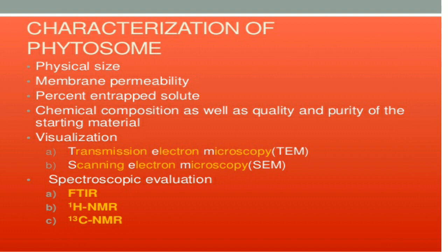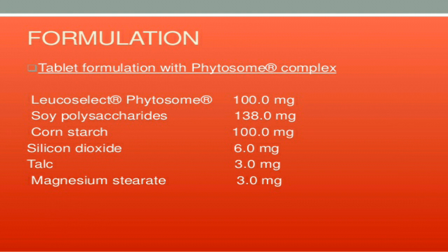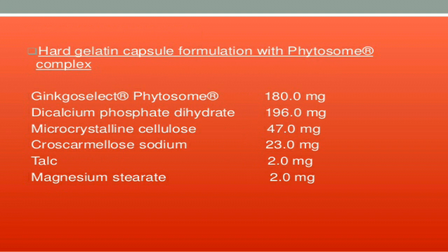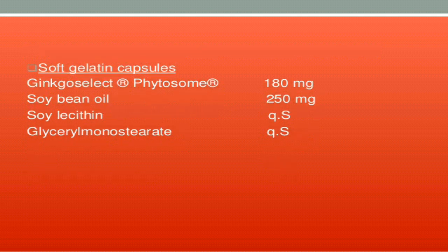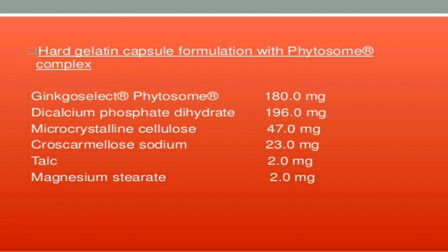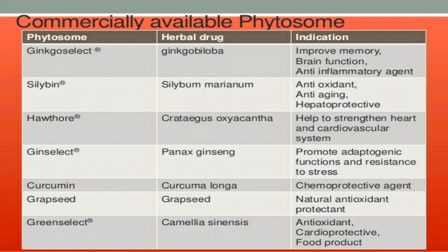Some phytosome formulations include tablets with soya, polysaccharide, and corn starch; hard gelatin capsules of Ginkgo biloba; and soft gelatin capsules where additives are added in the form of oils. Commercially available phytosomes include Ginkgo, Silibin, Othorn, Ginsilac, Curcumin, Grape Seed, and Green Tea phytosomes. The names of these phytosomes themselves indicate the main ingredient or phytoconstituent.